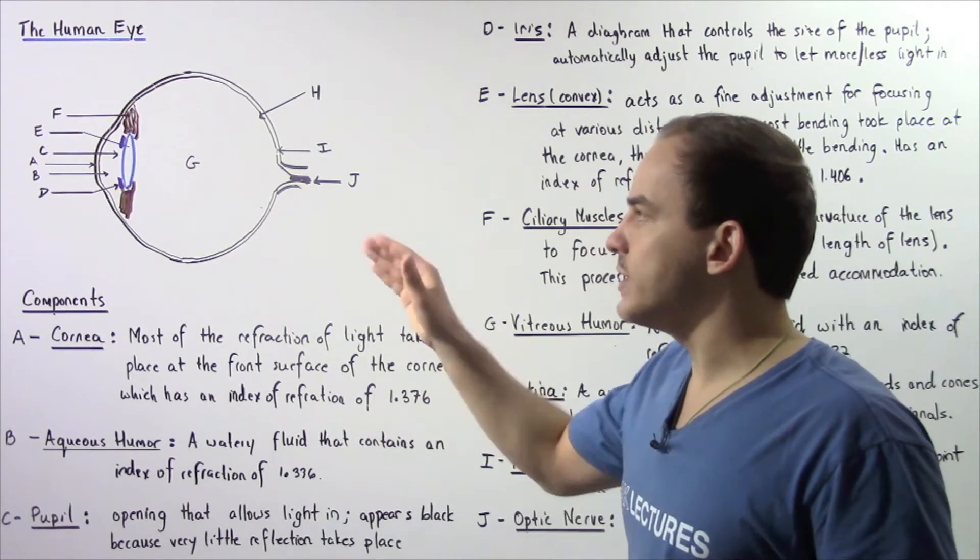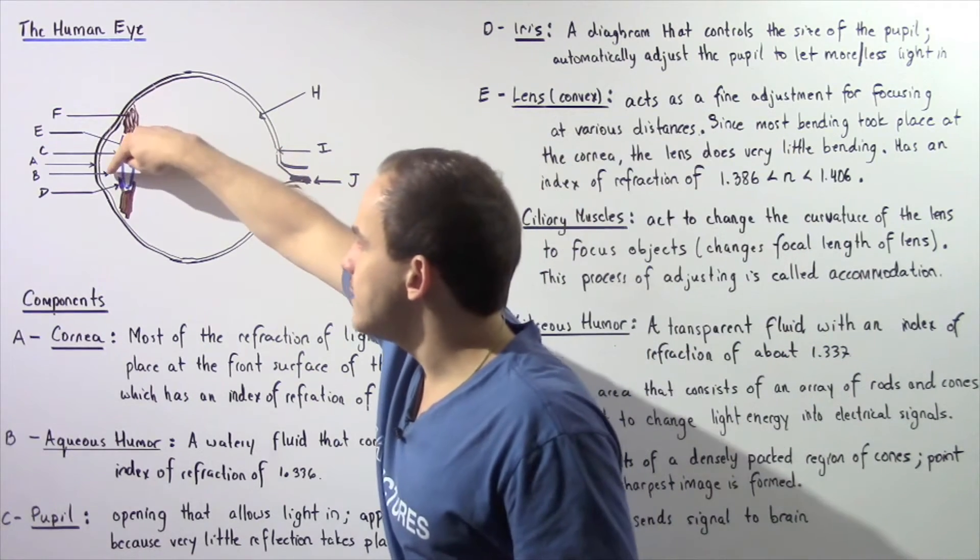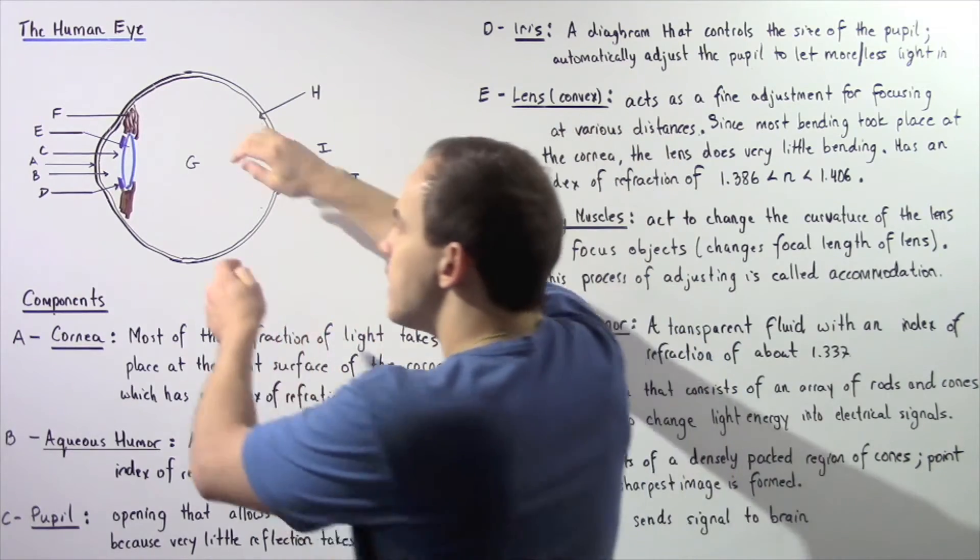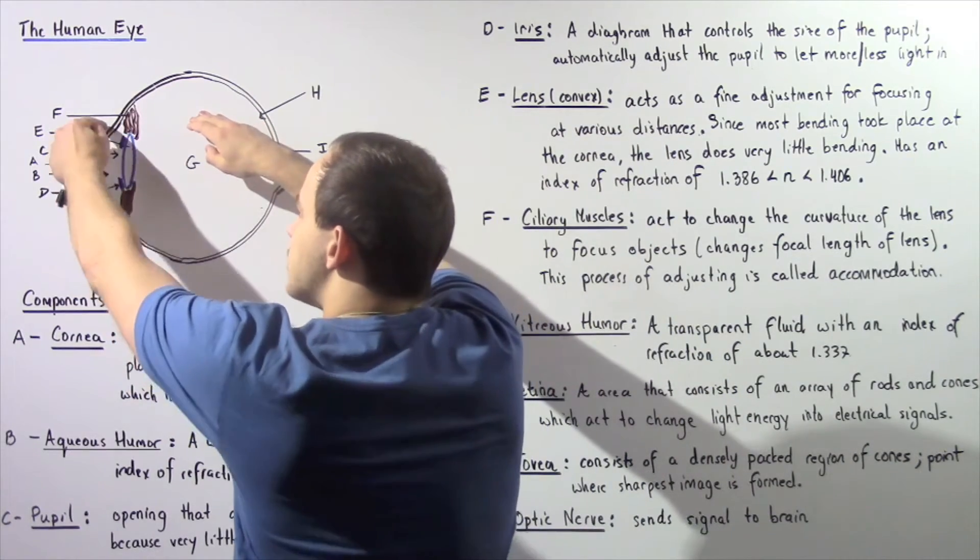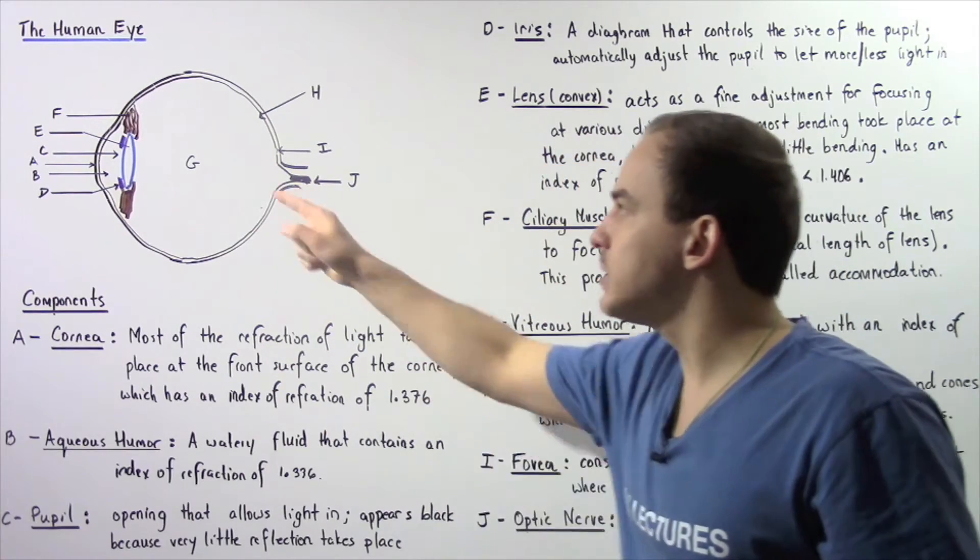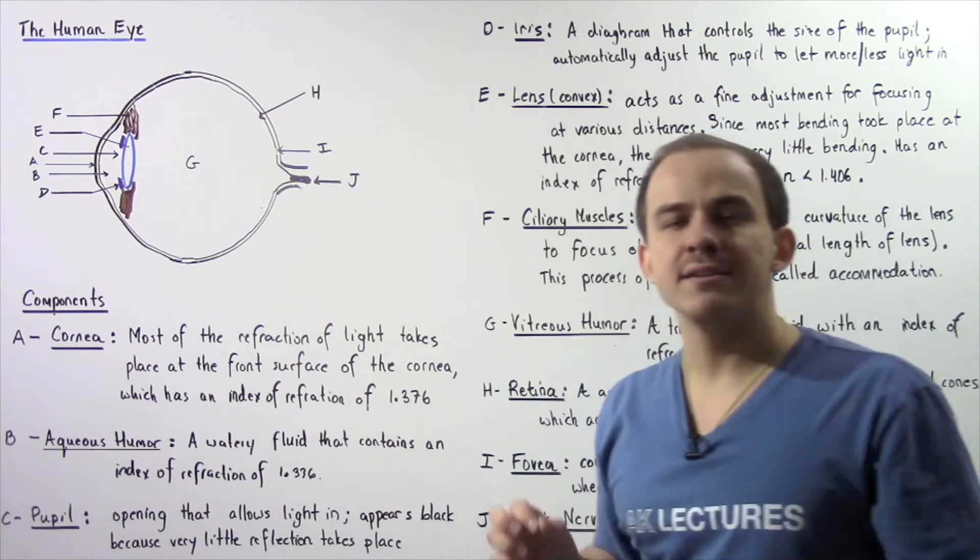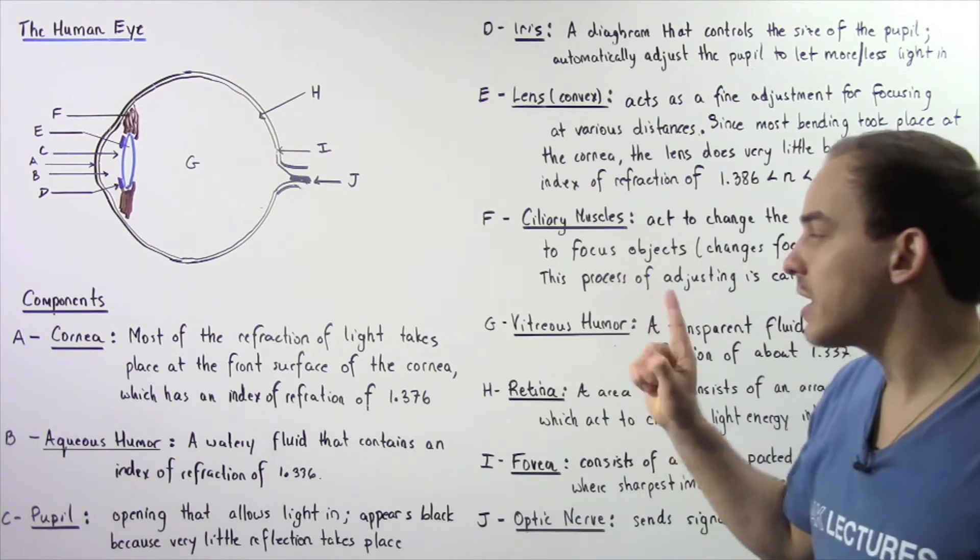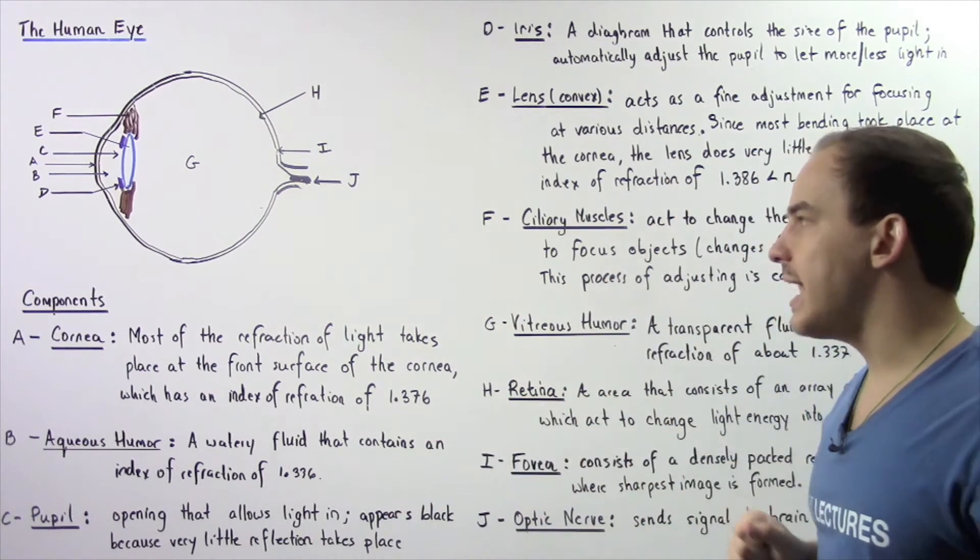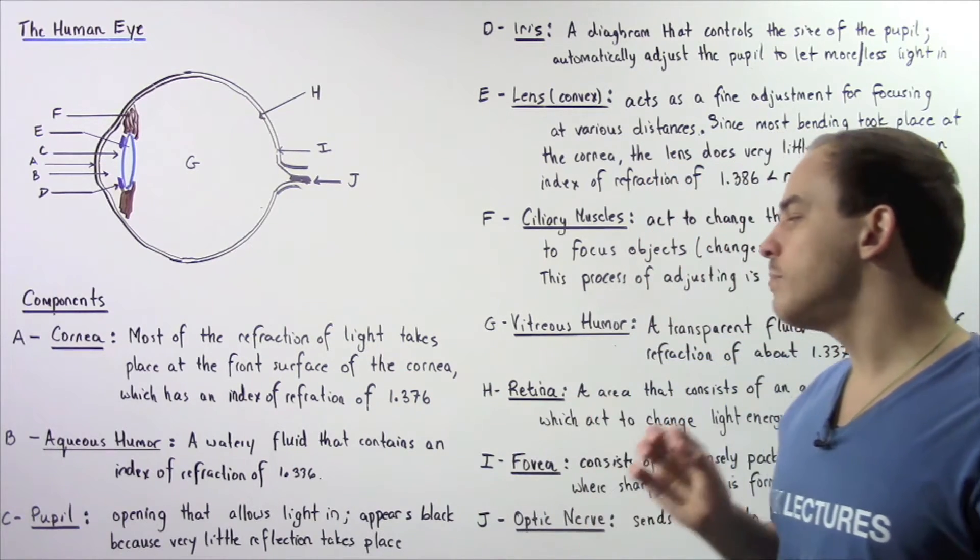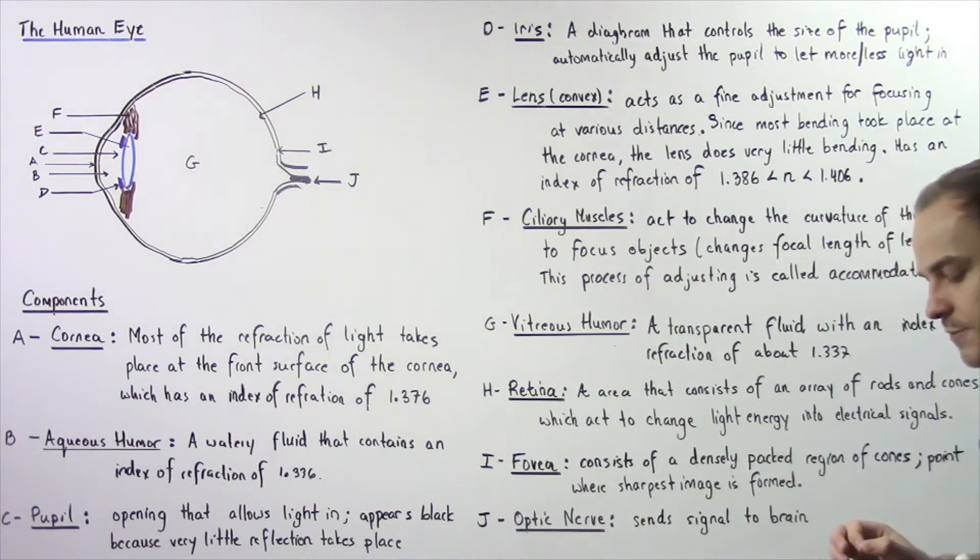Let's move on to region B. Region B is shown by the following arrow, and it's essentially the region between this blue section and the cornea. This region labeled by B is known as the aqueous humor, so this is a watery, transparent fluid that contains an index of refraction of about 1.336.